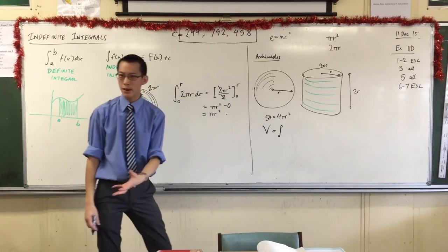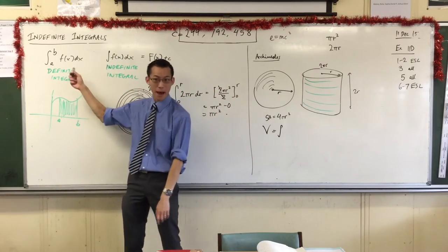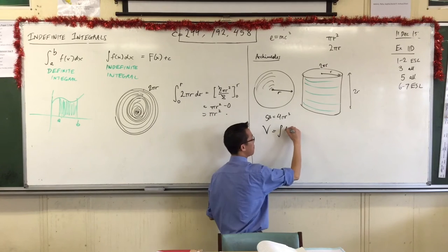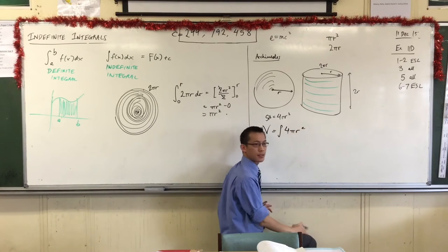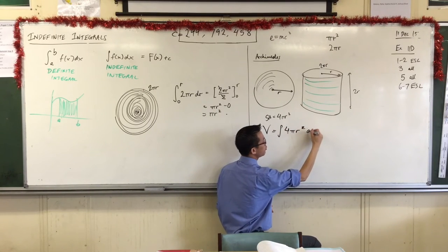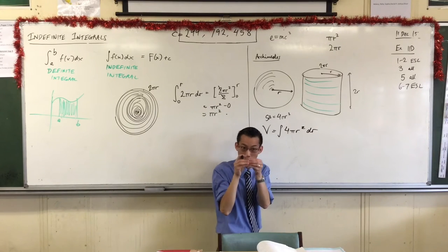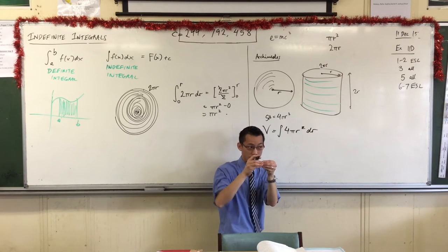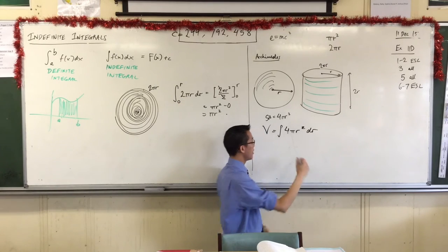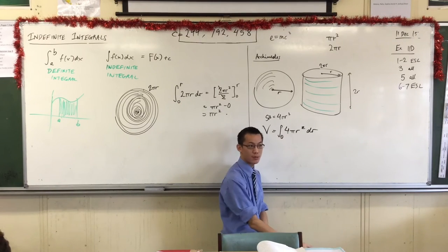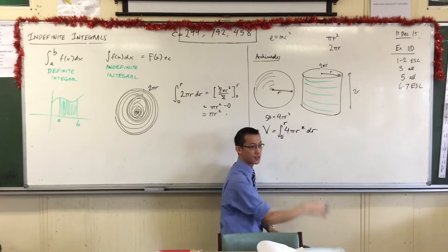So therefore, what I'm integrating, the thing that I'm adding up and combining into a whole, are a bunch of surface areas. And they are changing with respect to r. r is the thing that's changing as I go from that smallest surface area to the biggest one that's on the outside. The smallest one has a radius of zero, and the biggest one has a radius of r.